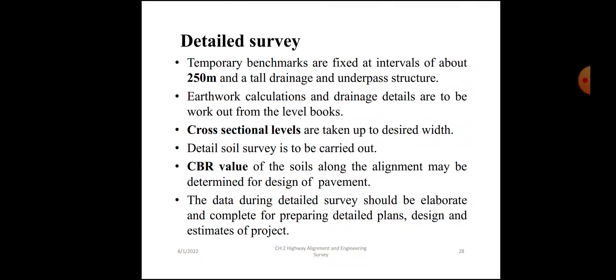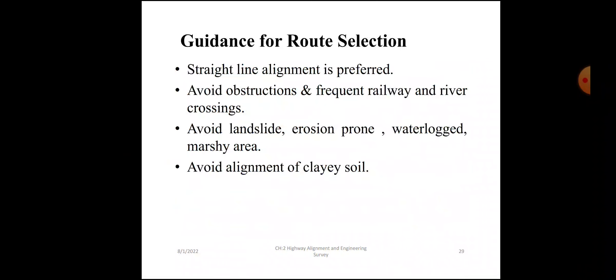Detailed survey: temporary benchmarks are fixed at intervals of about 250 meters and at all drainage and underpass structures. Earthwork calculations and drainage details are to be worked out from the level books. Cross-sectional levels are taken to the desired width. Detailed soil survey is to be carried out. CBR value of the soils along the alignment may be determined for design of pavement. The data during detailed surveys will be elaborate and complete for preparing detailed plans, designs, and estimates of the project.